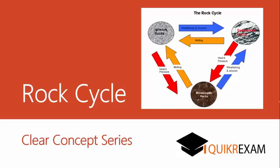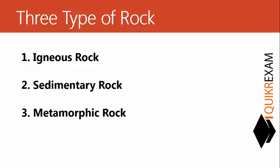Hello friends, welcome to the Clear Concept series. Today's concept is the rock cycle. We all know there are three types of rock: igneous rock, sedimentary rock, and metamorphic rock. All three types of rock are interconvertible — igneous rock can be converted into sedimentary rock, and sedimentary rock can be converted into igneous rock or metamorphic rock. Let's see how.